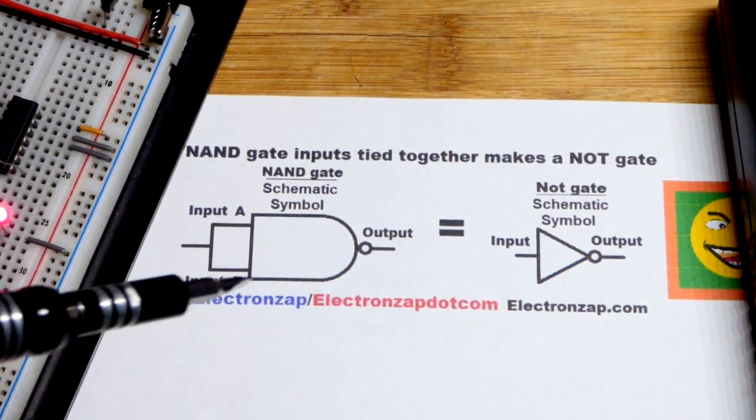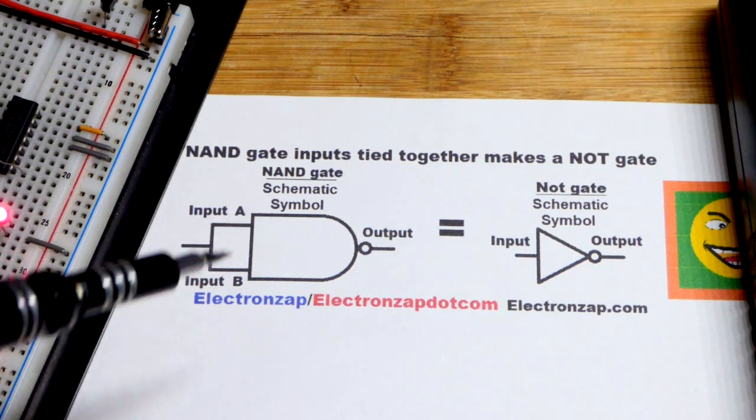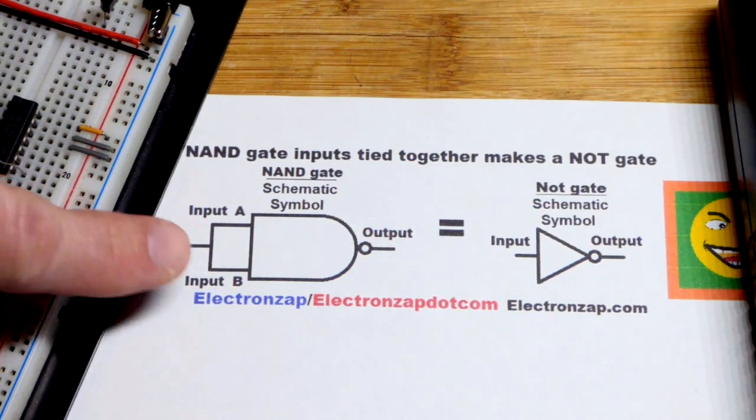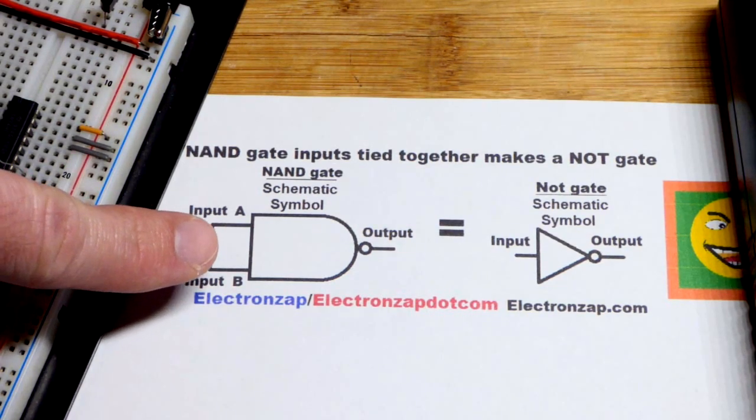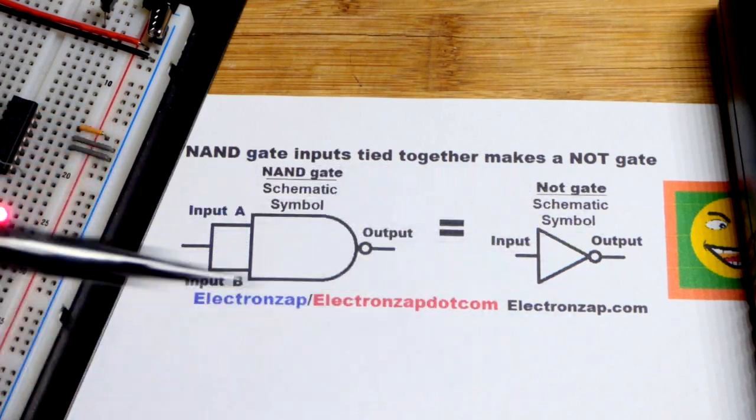By tying the inputs together, you will have one input, because those two inputs have to be the same voltage. They're tied directly together. Usually when you see the schematic, it's not there. So it becomes a NOT gate.